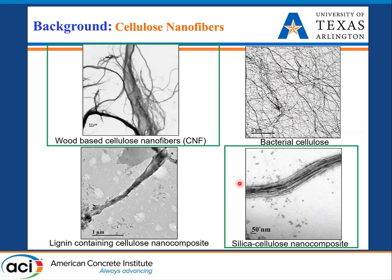In the last couple of years we have used different types of cellulose nanofibers. We have used fibers produced from bleached wood pulp, and also fibers from non-bleached wood pulp which contains lignin. We can also get cellulose from bacteria, which also has a fiber-like morphology. In our lab we also produce silica-cellulose nanocomposites. Today's presentation will focus on cellulose nanofibers from bleached wood pulp and the silica-cellulose nanocomposite application.